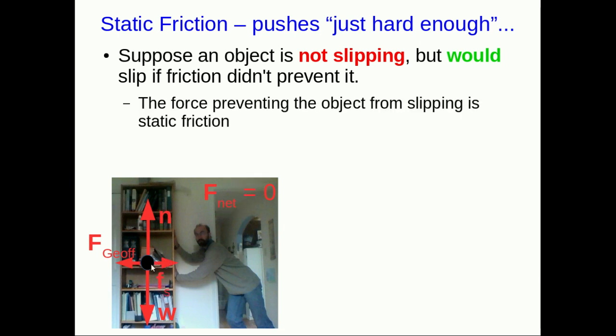And so that tells us that there must be a force back, and it has to be the static friction. The only possible agent for this force is the floor, and that is what is preventing this object from slipping. That's why, when I'm pushing on these shelves, they don't go accelerating off across the room.